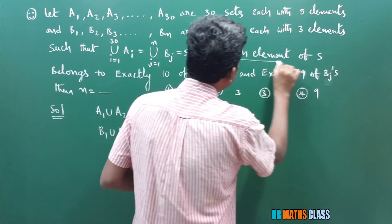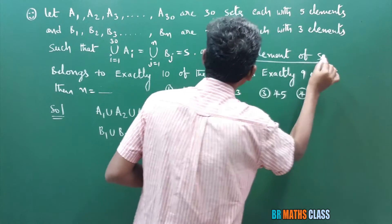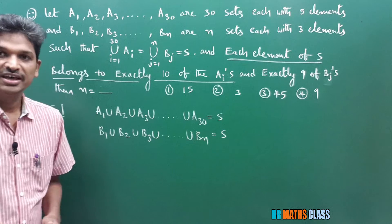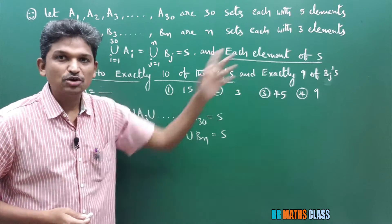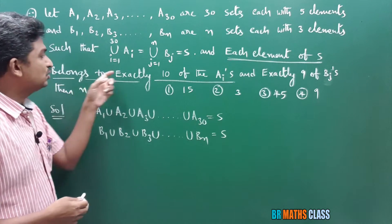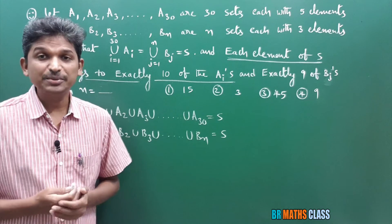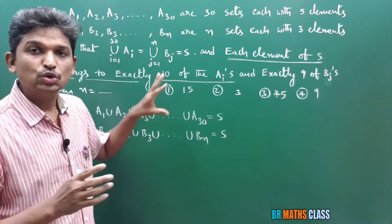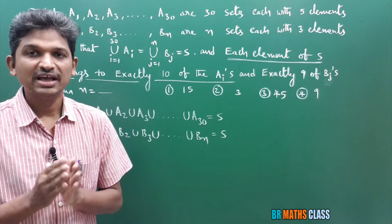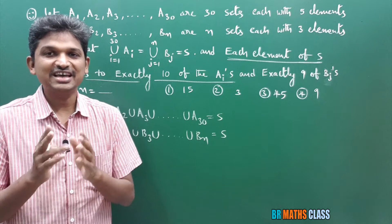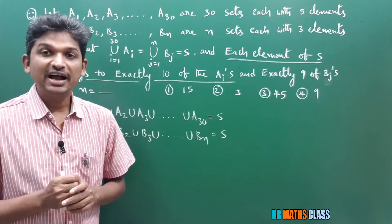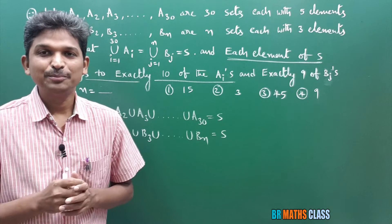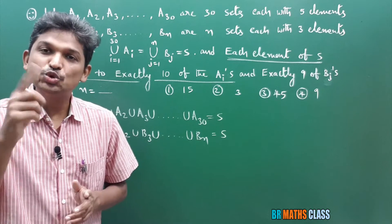You observe this one. Each element of S — this is the important thing — each element of S belongs to exactly 10 of the Ai's. Here many students get confused. To understand this, I'll take a small example: 3 sets, each set having 2 elements only, and union of those 3 sets gives you S, and each element of S belongs to exactly 2 of the Ai's.